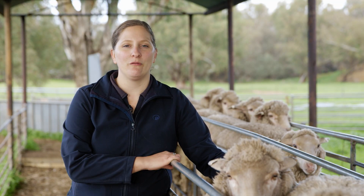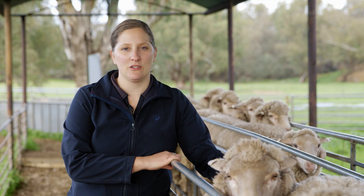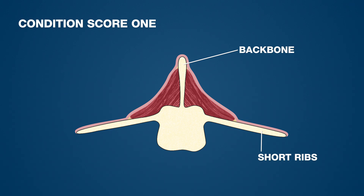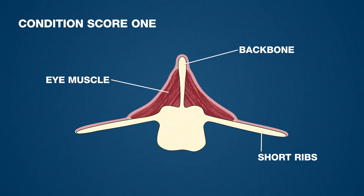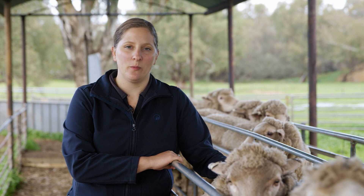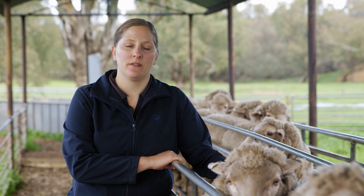Condition score 1 will have no fat and very little muscle. The bones of the backbone and the short ribs will be very pointy and you'll easily be able to feel in between them. The eye muscle will be very small and there will be a hollow from the spine down to the short ribs. At this condition score the sheep will be prone to disease and at risk of death.